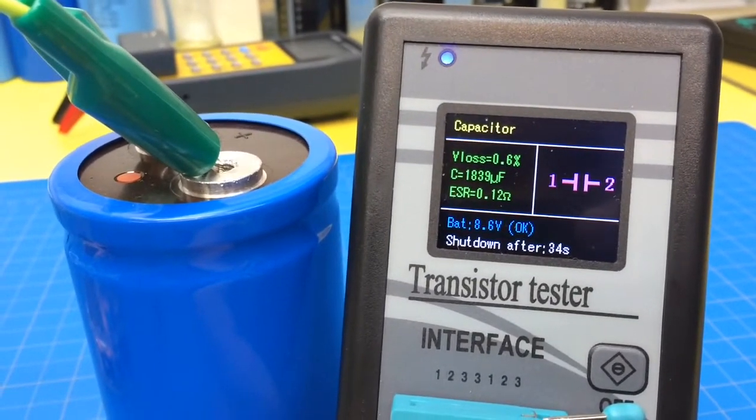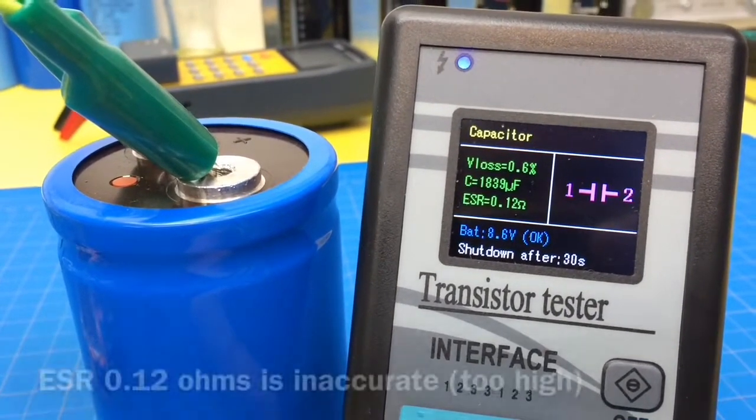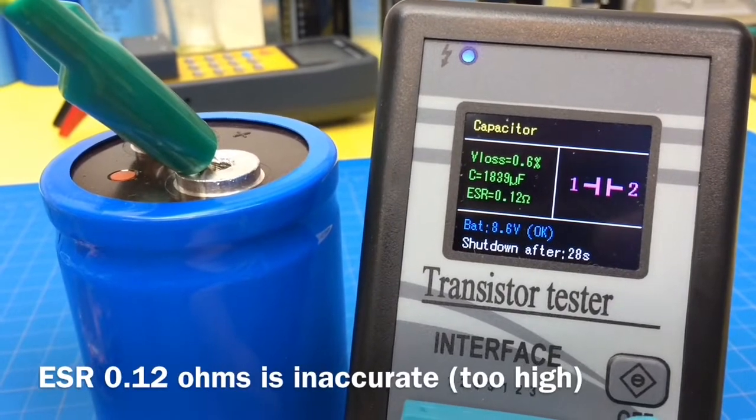Voltage loss 0.6, capacitance 1839, it's a 2000uF, so that's pretty close. ESR 0.12.